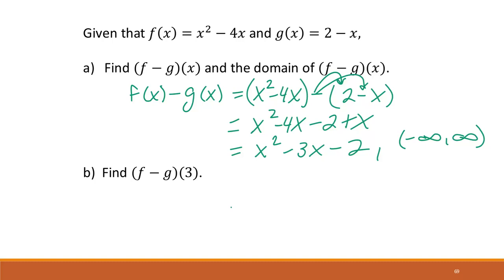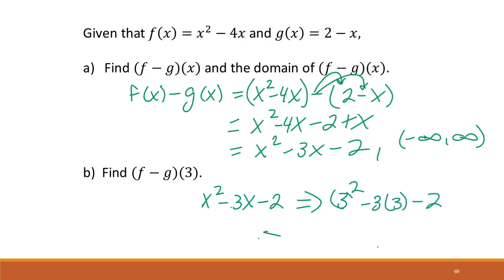The second question wants (f − g)(3). We've already found f minus g, so we substitute 3 into x² − 3x − 2: that gives 9 minus 9 minus 2. We end up with negative 2 as our final answer.